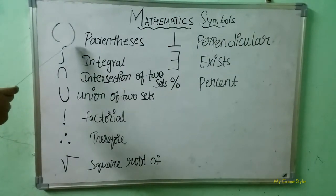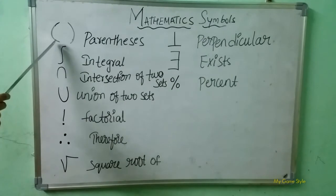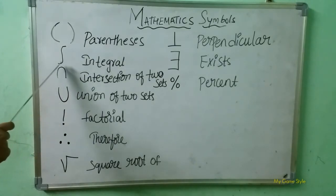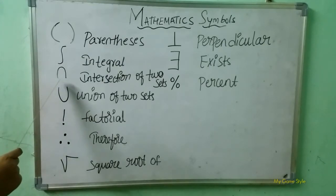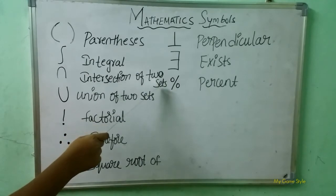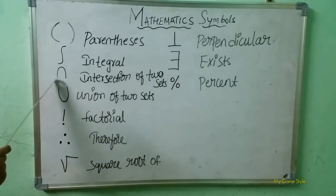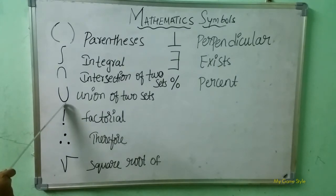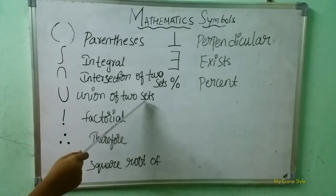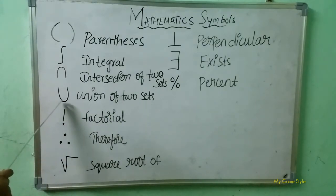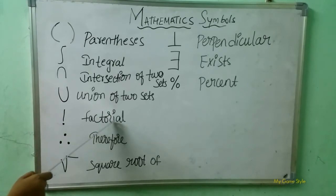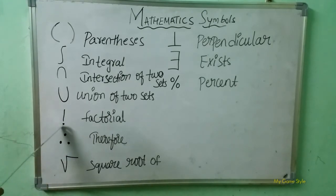What is this symbol? This is a parenthesis symbol. Next, what is this symbol? Integral — this is an integral symbol. Next, here what is this symbol? This is called intersection of two sets symbol. Next, here what is this symbol? This is a union of two sets symbol. Next, here what is this symbol? This is a factorial symbol.